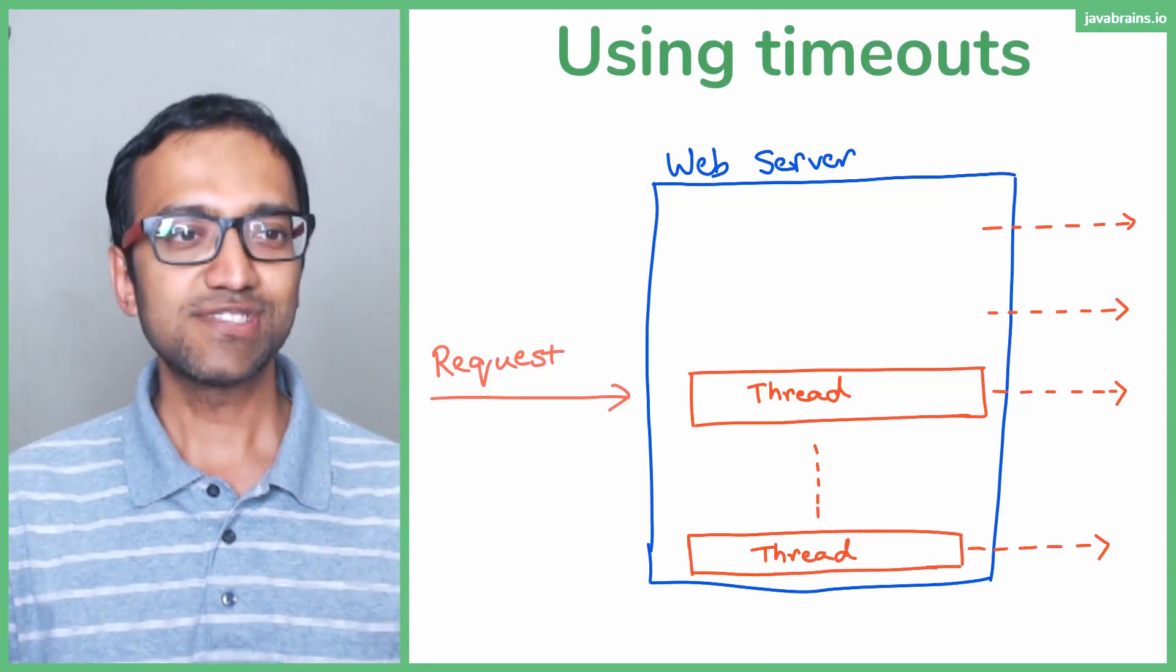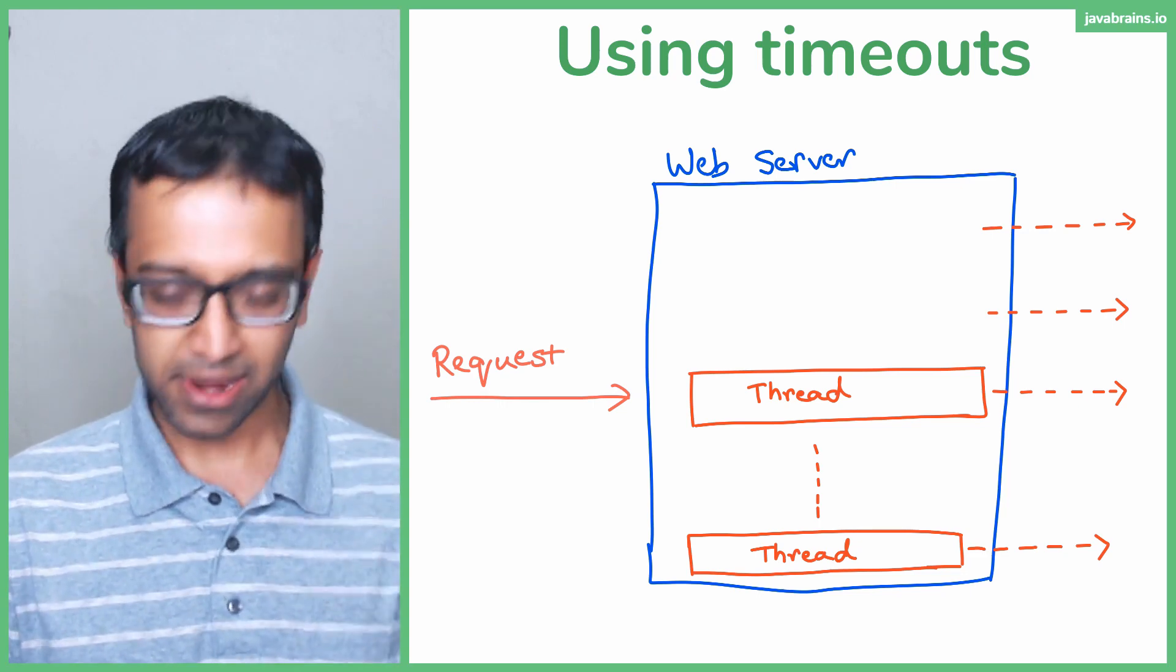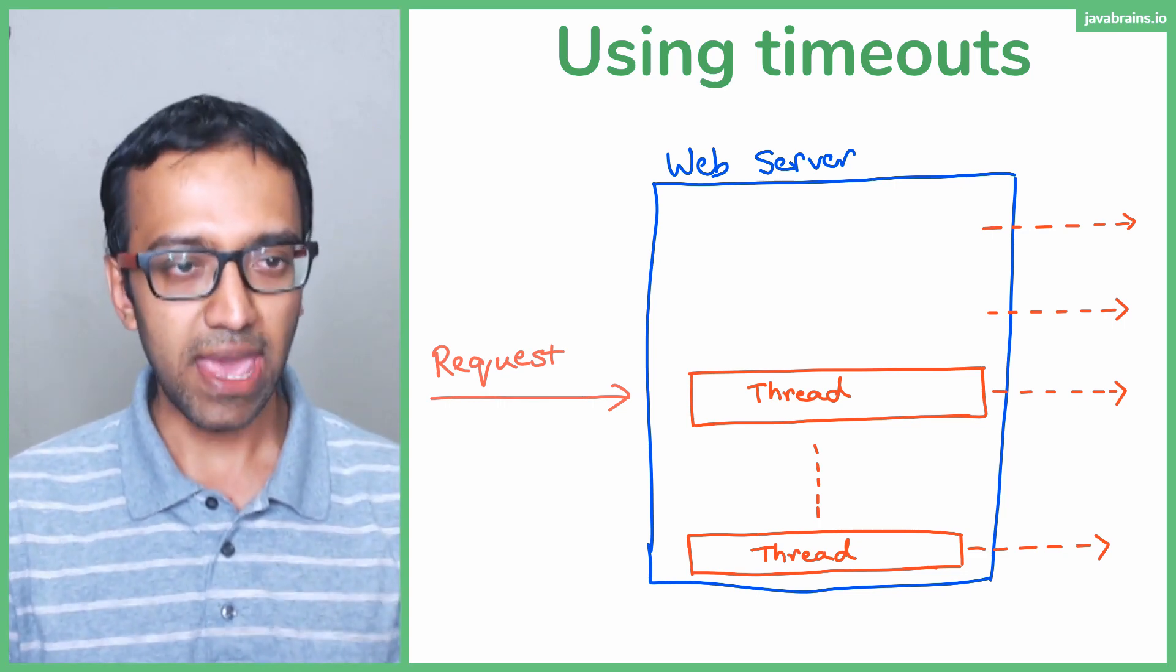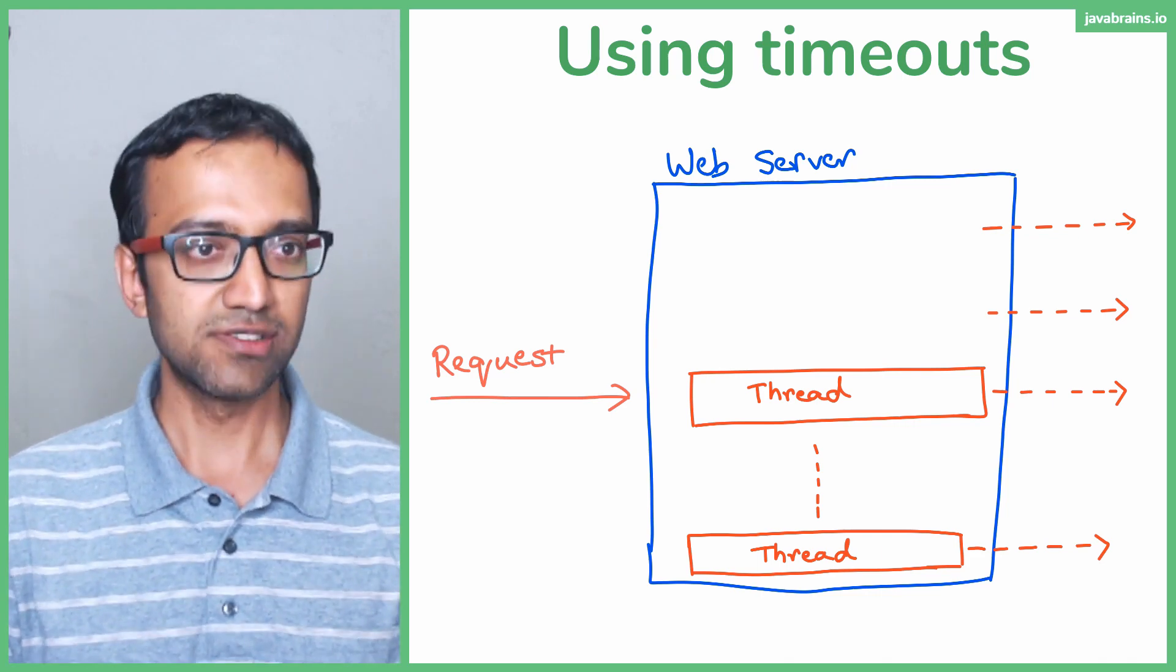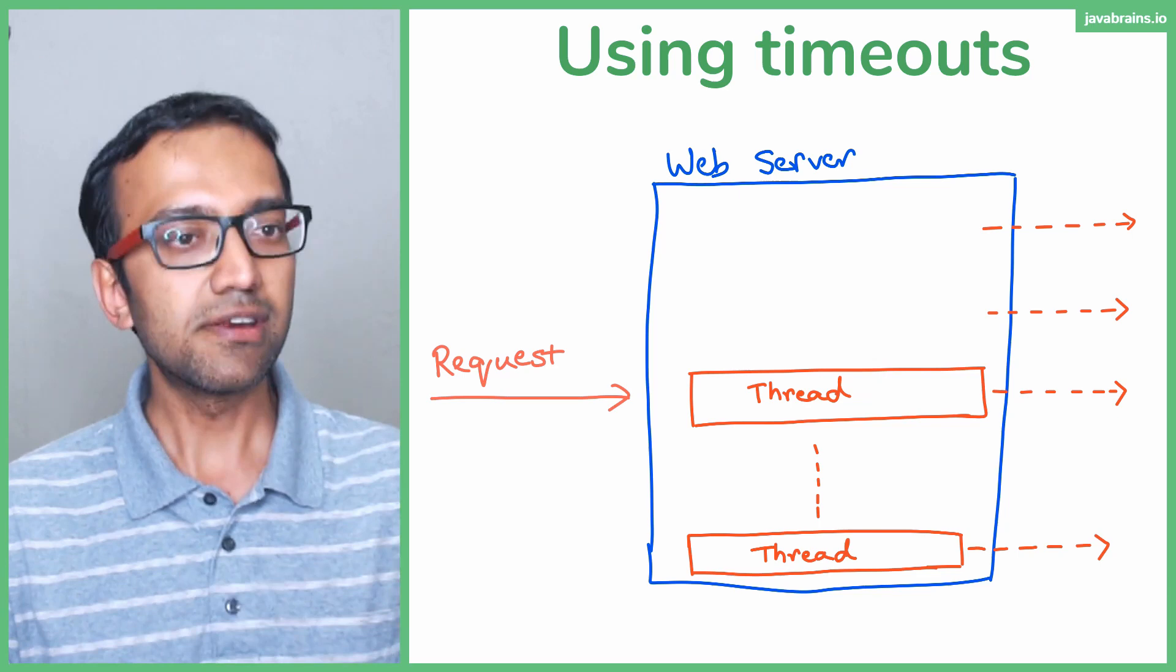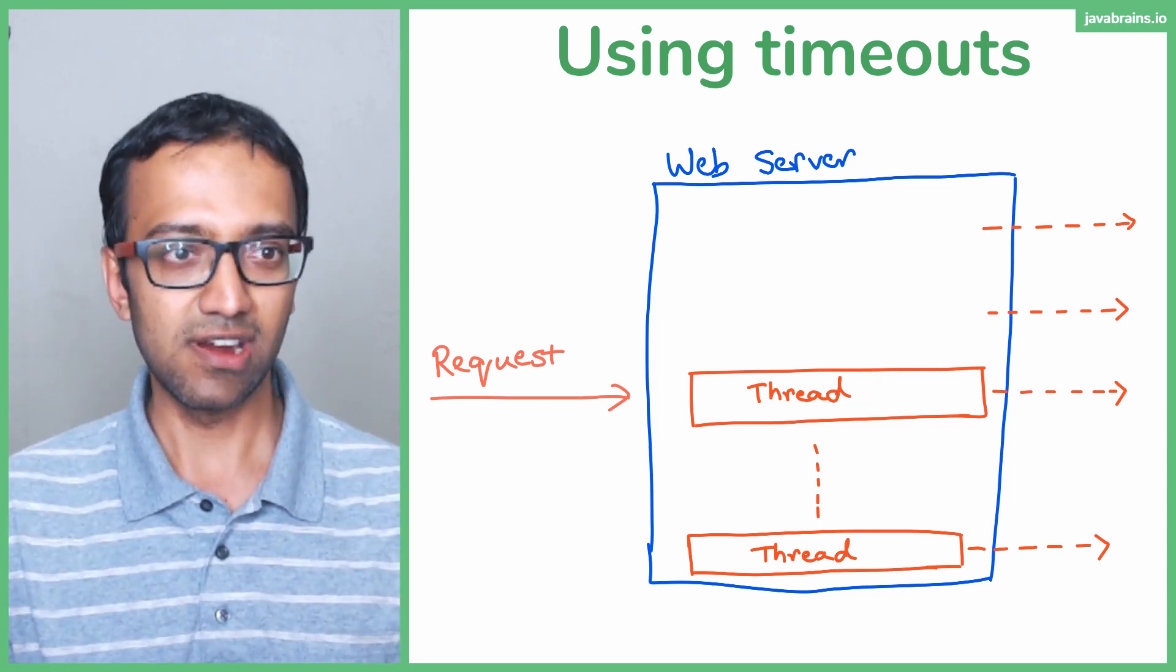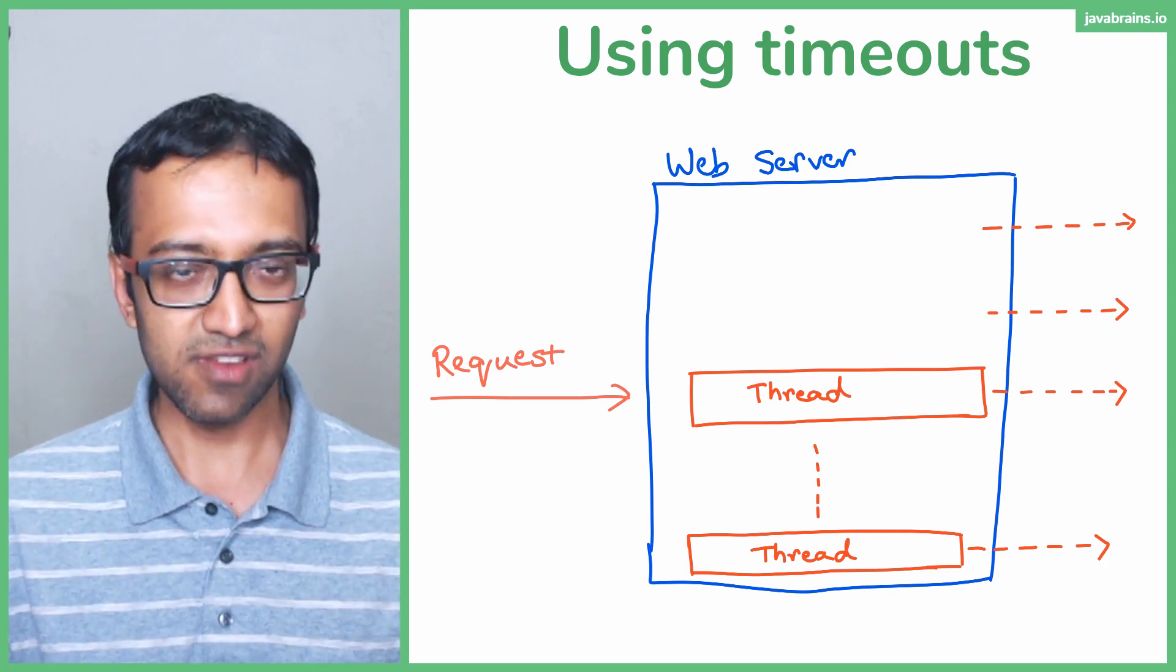So how do you set a timeout? We are using the Spring REST template to make API calls here, right? So we are using a Spring REST template to say, make this API call and return back a response. And we are not giving it any timeout information. We are saying we have no error handling, no timeout information.